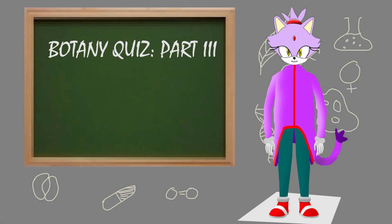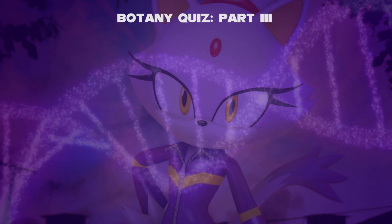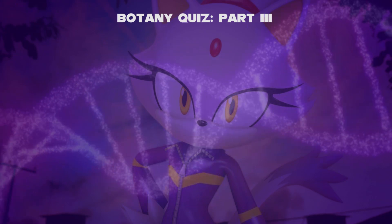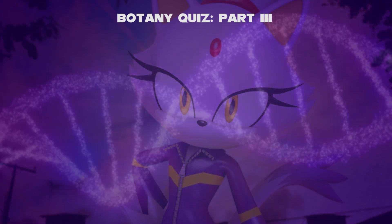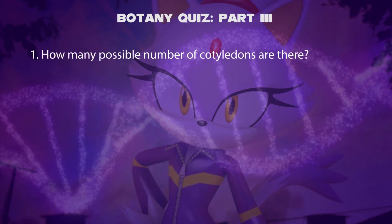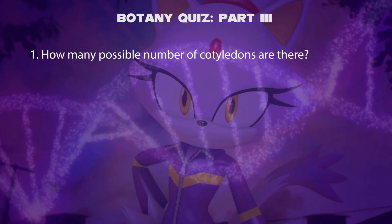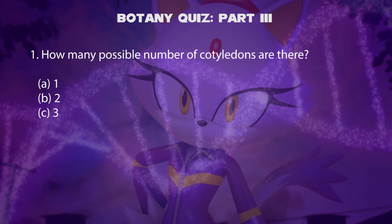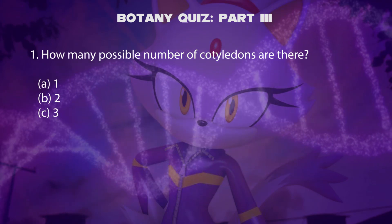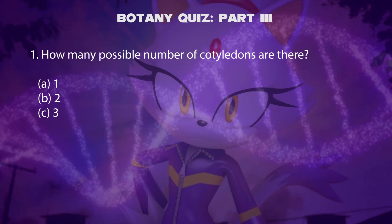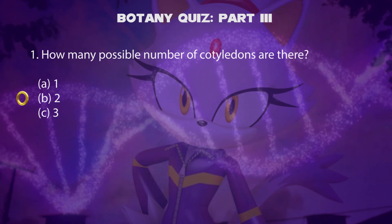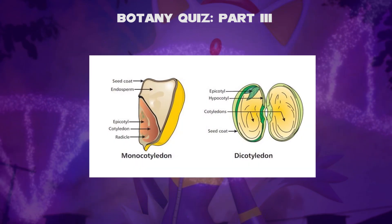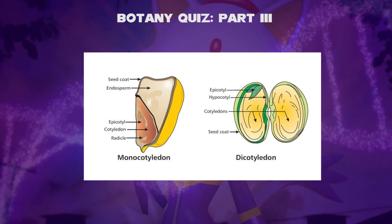Hello, I'm Blaze. This is an end-term botany quiz, part three. In this video I'll ask you some questions and you have to answer the following options correctly. First question: how many possible number of cotyledons are there? Is it one, two, or three? The answer is two. In flowering plants, namely angiosperms, there are typically two types of cotyledons.